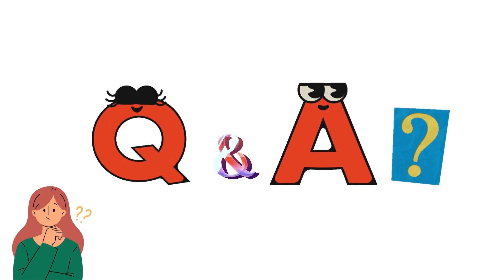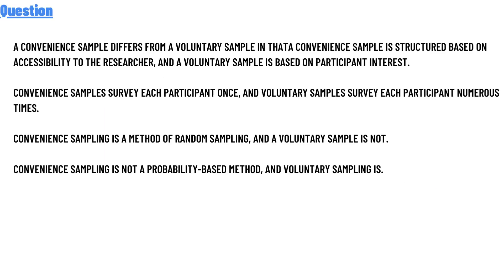Our today's question is: how does a convenience sample differ from a voluntary sample? A convenience sample is structured based on accessibility to the researchers, while a voluntary sample is based on the participant's interest. A convenience sample surveys each participant once, whereas a voluntary sample may survey each participant numerous times.